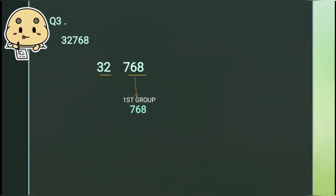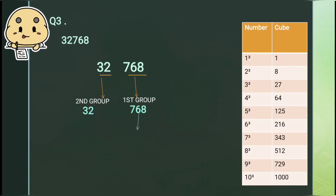Let's take one more number from question number 3: here we have 32768. Again we will start making groups from the right-most side. We have got 2 groups — in the first group we have 768, and in the second group we have 32. Looking at the ones digit of the first group, here it is 8. So the ones digit of the cube root will be 2, because 8 cubed is 512, which ends with 2.